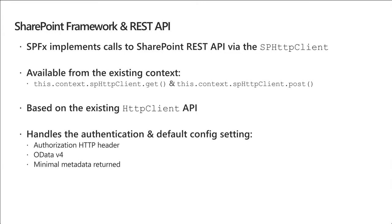The SharePoint Framework implements calls to the SharePoint REST API using the SP HTTP client. This is derived from the built-in HTTP client API object and adds additional configuration to requests on our behalf — like telling the SharePoint REST API we want OData v4 and minimal metadata returned. There are two methods available derived from the Fetch API: the get method and the post method. The post method is used for updates, deletes, and creates.